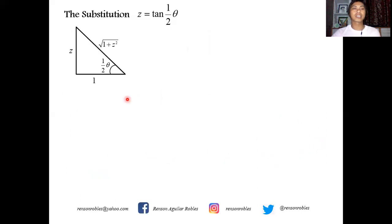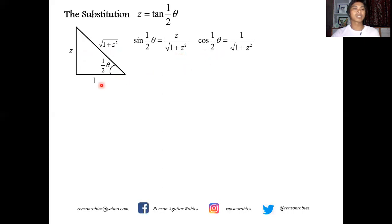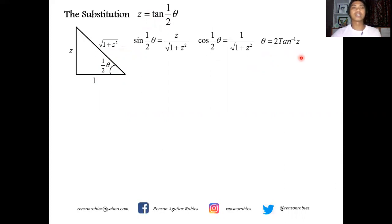Using the triangle, we generate sine of half theta — opposite over hypotenuse — as z over the square root of 1 plus z squared, and cosine of half theta — adjacent over hypotenuse — as 1 over the square root of 1 plus z squared. Taking the inverse of z equals tangent of half theta gives theta equals 2 arctangent z. We now look for sine theta, cosine theta, tangent theta, and dθ.